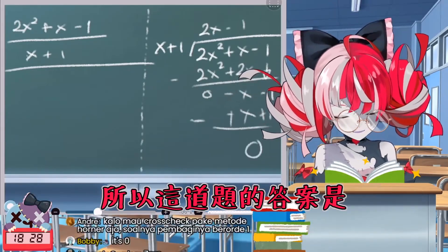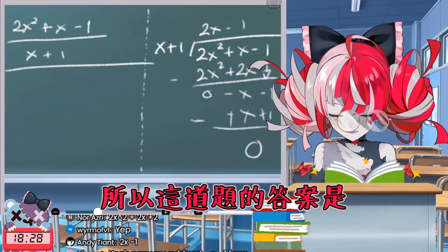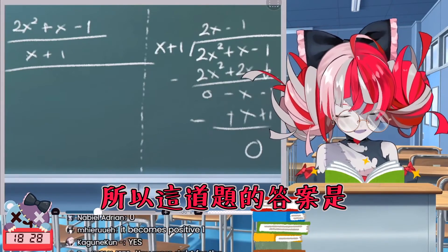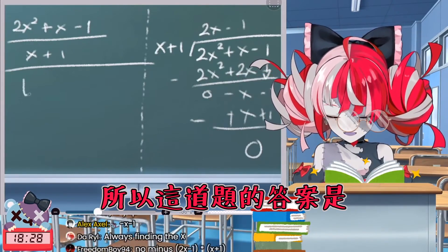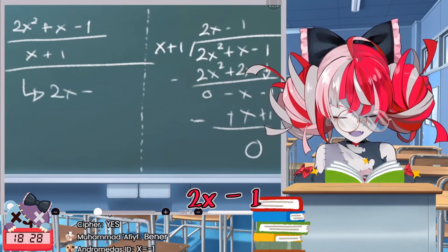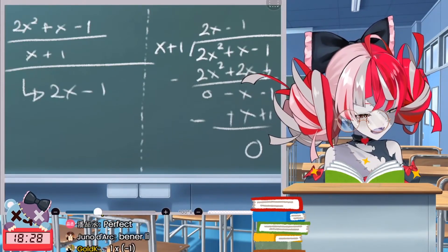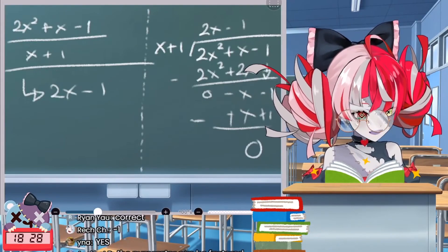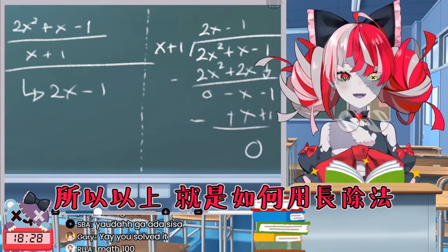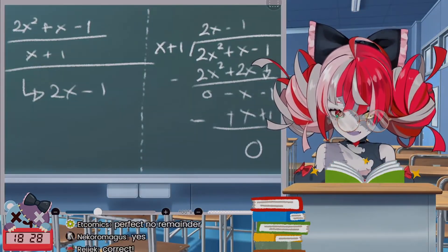So, 2x squared plus x minus one divided by x plus one equals 2x minus one. Is that right? Yay! That's how you do long division — wow, we are smart.